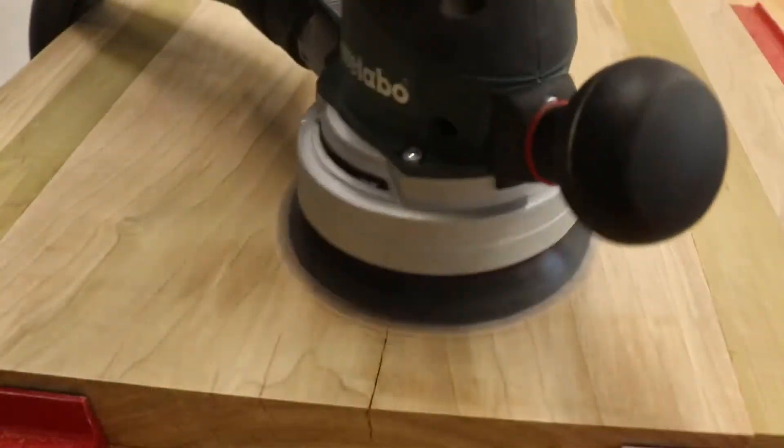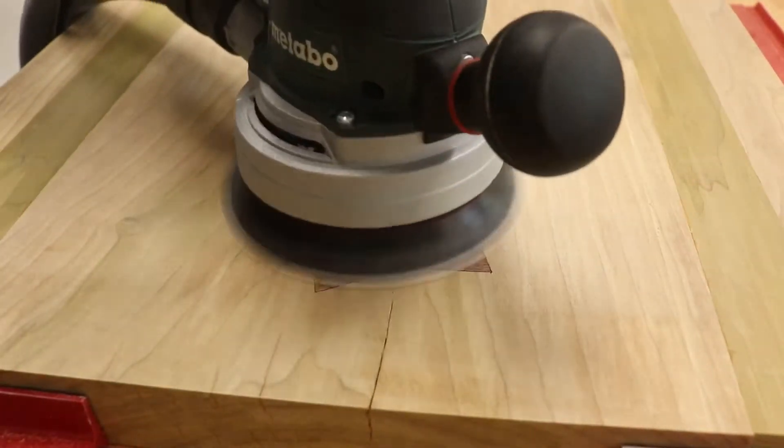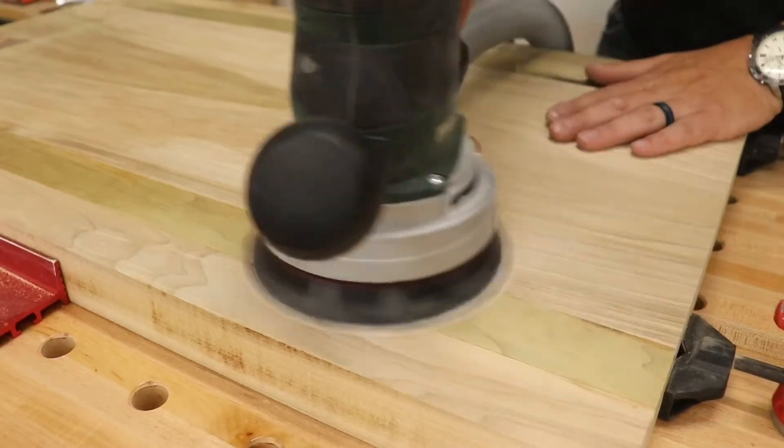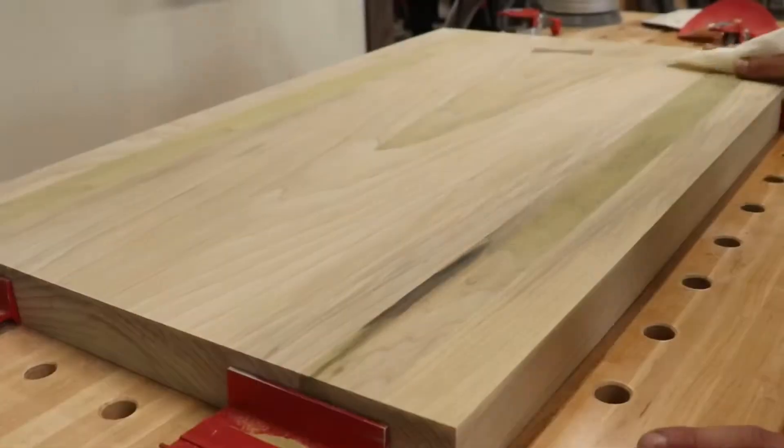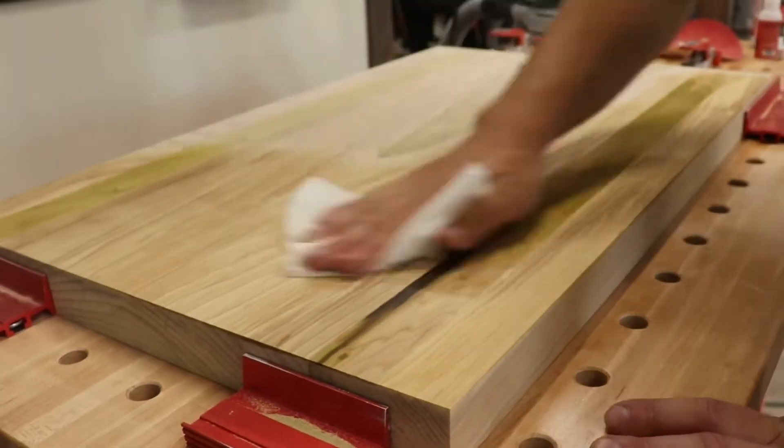So I usually start the sanding process with 60 grit, move down to 120 and then 220. I then raise the grain with either mineral spirits or water and then I sand again.